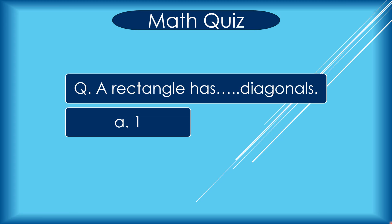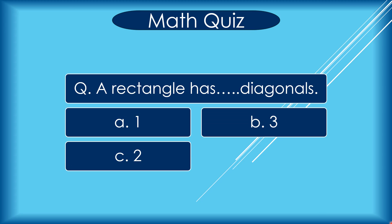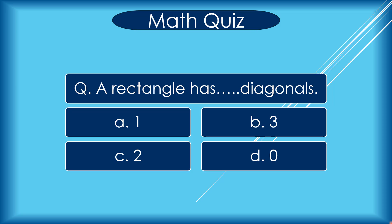A rectangle has how many diagonals? A 1, B 3, C 2, D 0. Correct answer is 2.